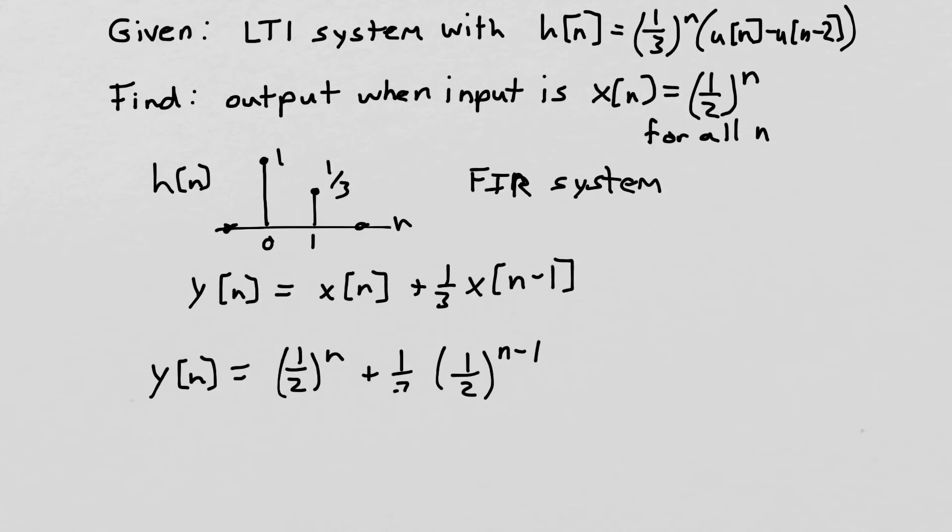Let me fix that. So we now have a final answer. We could rearrange it a little bit by pulling out a factor of a half. So we could pull out a half to the n, and we're left with 1 plus 1 third times 1 half to the minus 1.